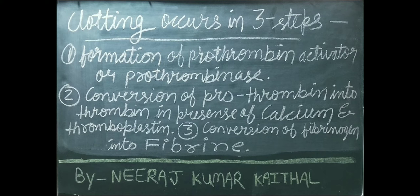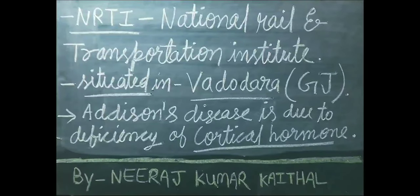Pehle step mein prothrombin activator ya prothrombinase ka nirman hota hai. Uske baad: conversion of prothrombin into thrombin in the presence of calcium and thromboplastin. Phir prothrombin, thrombin mein convert hota hai calcium aur thromboplastin ki upasthiti mein. Third step: conversion of fibrinogen into fibrin — yeh final step hota hai jismein fibrinogen, fibrin mein convert ho jaata hai.